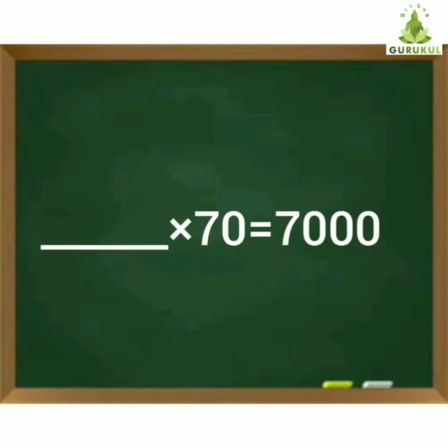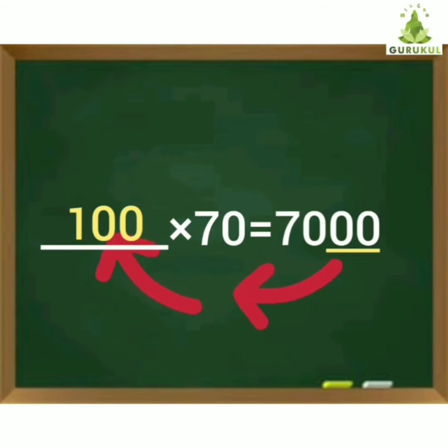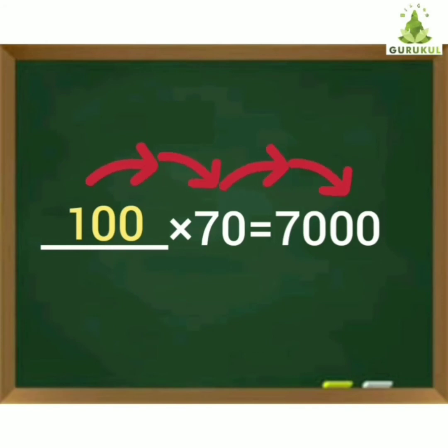Solve this example: which number will be multiplied by 70 to get the answer 7,000? Students, tell me how many zeros are in 70? Teacher, 70 ones are 70. Very good. So which number will you write first? Teacher, number 1. Very good. So now see the answer — it is 7,000, which means 2 more zeros are remaining. So put 2 zeros in front of number 1. When you multiply 100 by 70, the answer will be 7,000. Do you understand? Yes, teacher.